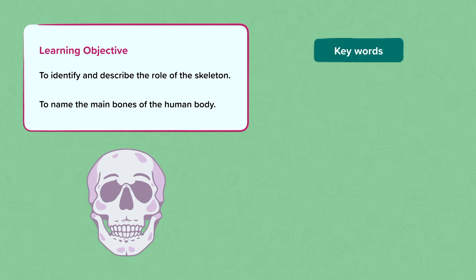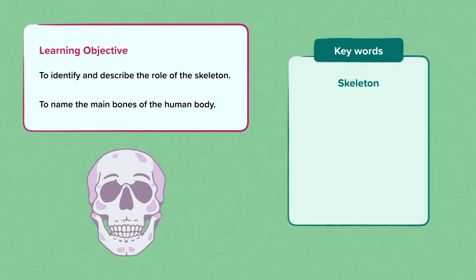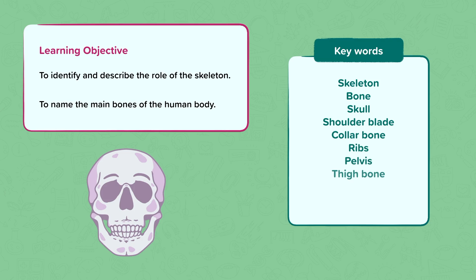The keywords we're going to use include skeleton, bone, skull, shoulder blade, collarbone, ribs, pelvis, thigh bone, kneecap, and spine, also known as the backbone.